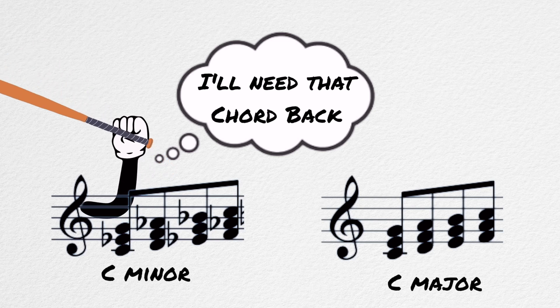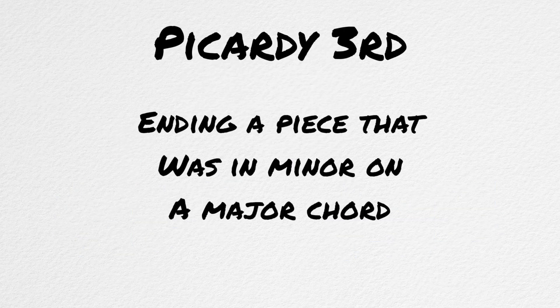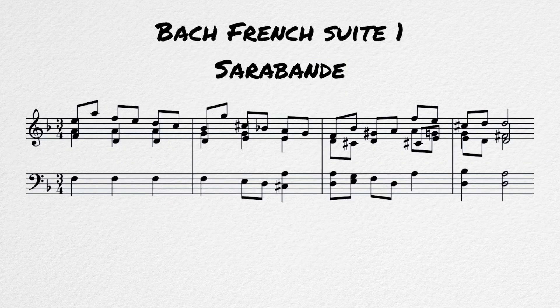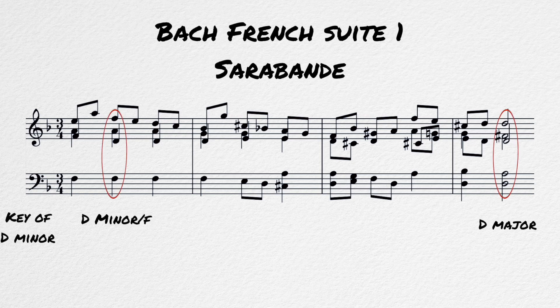But what if you want to borrow from major when you are in minor? This is less common than the other way around, but it does happen. The most prominent example of this is the Picardy third. A Picardy third is ending a piece that was previously in a minor key on the parallel major key. The Sarabande from Bach's first French Suite is an example of this. This piece is in D minor, but ends on a D major chord after the final cadence. This was very commonly done in the Renaissance and Baroque era, because the minor chord was seen as less stable than the major one, and it gave the piece a stronger sense of finality if it was ended on a major chord.